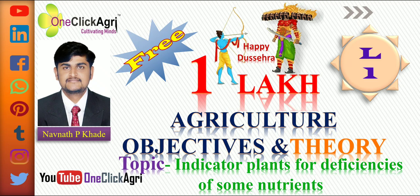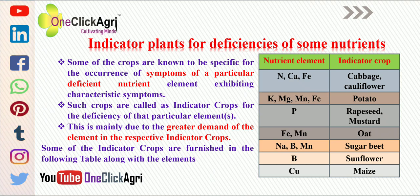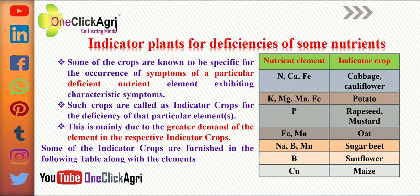Let's start with Theory Lecture 1, which covers Nutrient Elements along with Indicator Crops or Plants. First of all, we will see the basic terms — the first one is Indicator Plant.